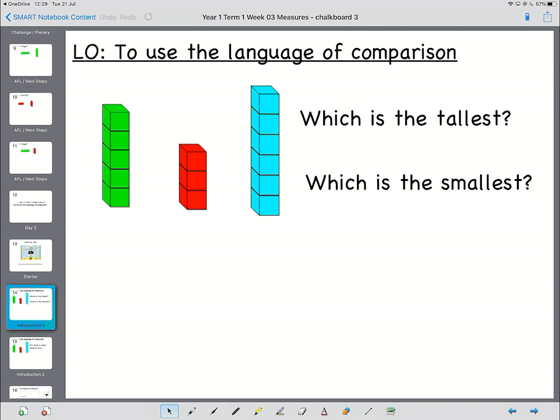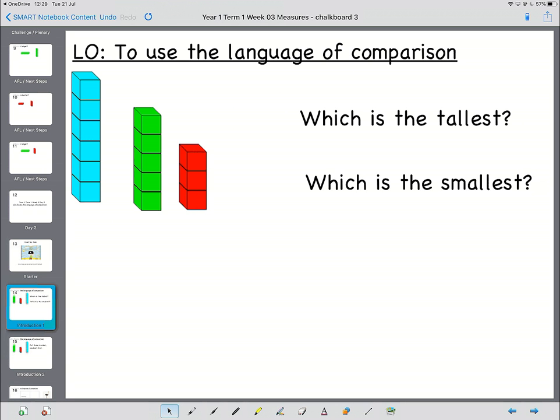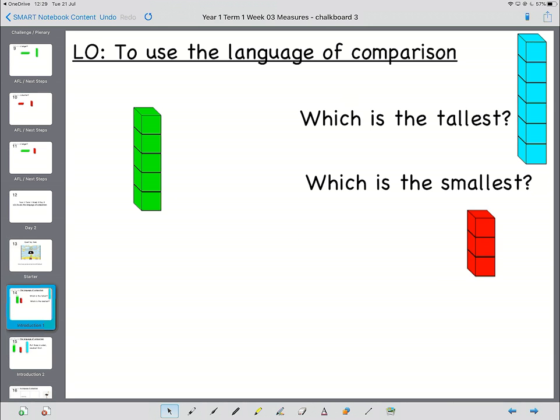Which is the tallest? Well, the tallest is the same as the longest, so that's got to be this one. But let's just check by putting them into some kind of order. Now you can see them compared with each other, but the blue one is definitely the tallest. So which is the smallest? Well, the smallest one has got to be the red one.